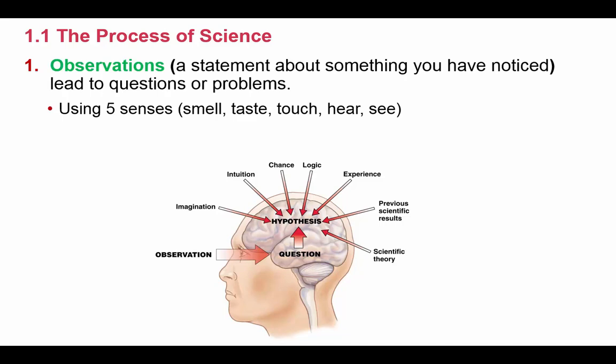The first part of the scientific method is making observations. An observation is a statement about something you've noticed. The things we observe aren't just things we see — standing in front of a classroom, I observe my students through vision, but observations also include things we smell, taste, touch, and hear. Observations are when you gather information using any of your five senses.